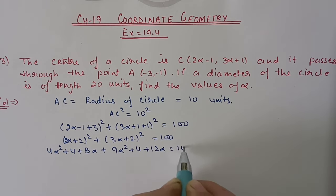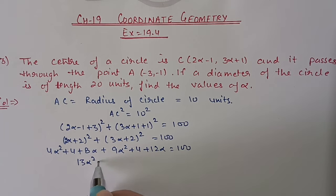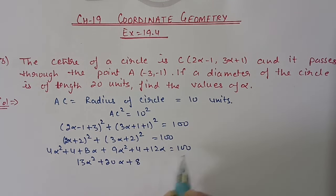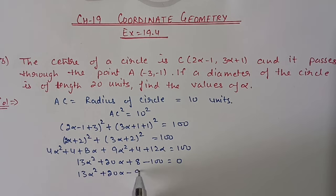Combining like terms: 4α² + 9α² = 13α², 8α + 12α = 20α, and 4 + 4 = 8. Shifting 100 to the other side gives 13α² + 20α + 8 − 100 = 0, so finally we get 13α² + 20α − 92 = 0. Now we need to factorize this equation.